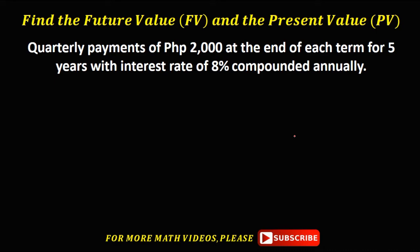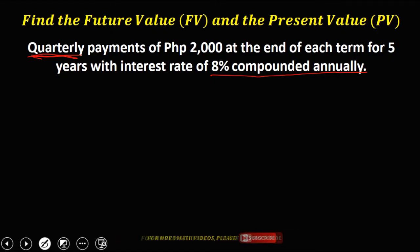Finding the future value and the present value of a general annuity. We have this given: quarterly payments of 2,000 pesos at the end of its term for 5 years with an interest rate of 8% compounded annually. From this problem, the periodic payment is 2,000 pesos.